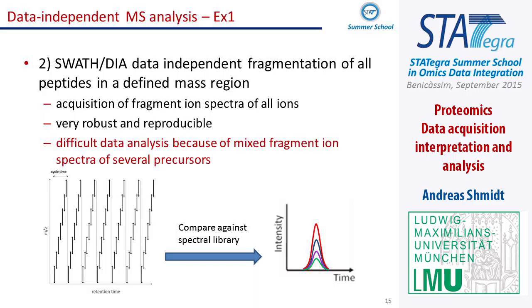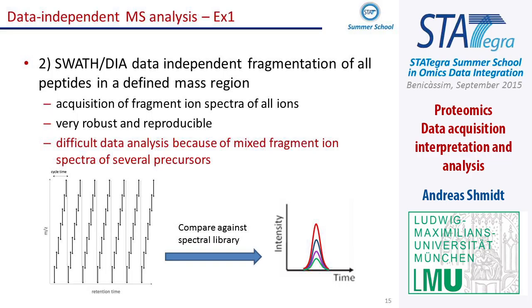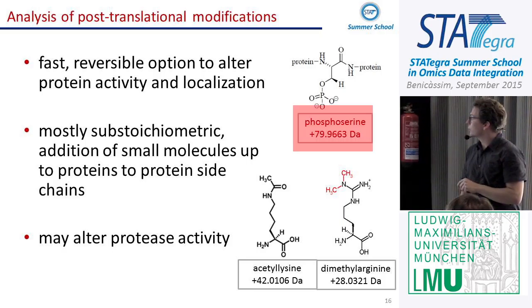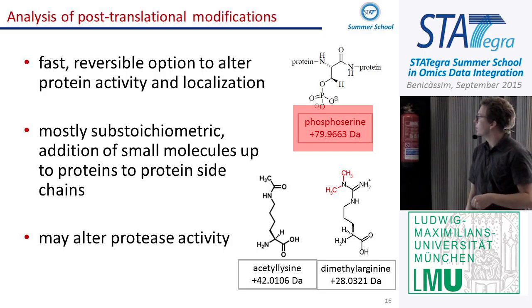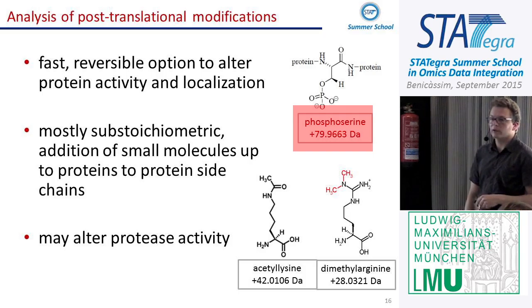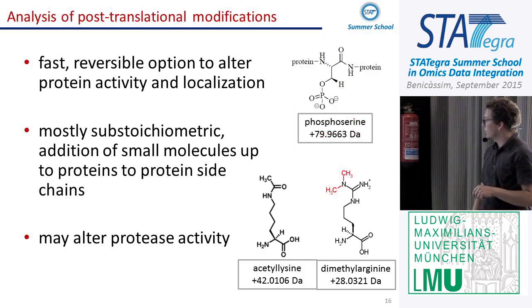Only a few instruments like QTOF and Q Exactive can do that because they have high resolution — you need a high-resolution instrument. Also worth mentioning, post-translational modifications like phosphorylation introduce a mass shift on the peptide. For instance, phosphorylation on a serine has a certain mass shift, and if both the precursor and the fragment ions carry this mass shift, it's most likely a phosphorylation.